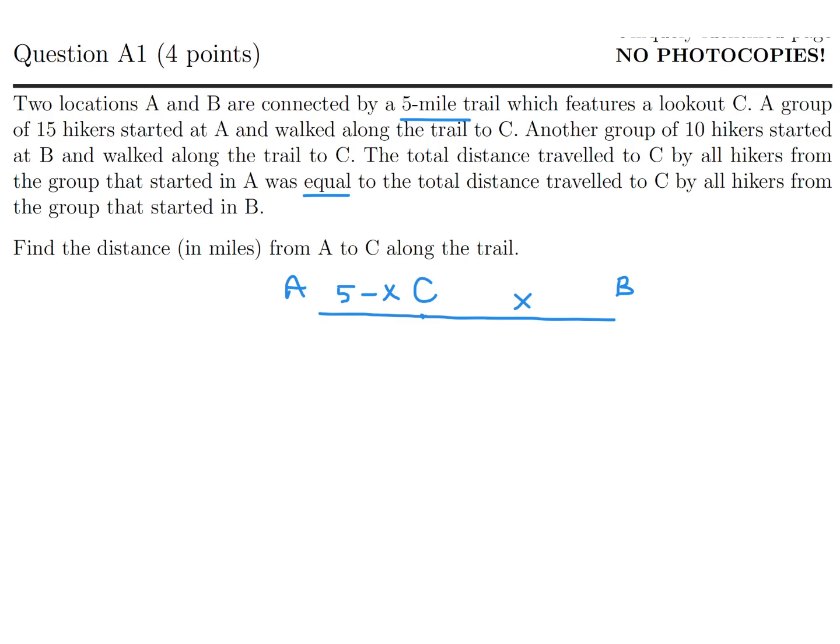So they're basically saying that the 15 people that go from A to C, that distance, according to what I've labeled, would be 15 times 5 minus X. And they're saying that is equal to the total distance traveled by all the hikers that traveled to C from B, that started in B. So the ones that B, how many of those? 10 of those. So 10 times X, basically. And I think that's it. That's the equation.